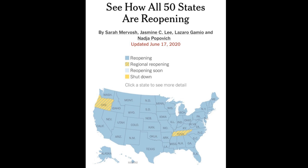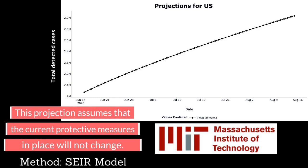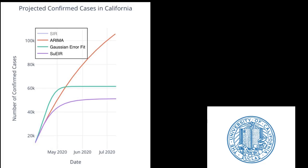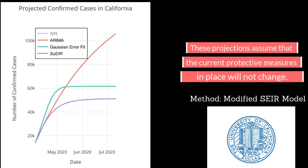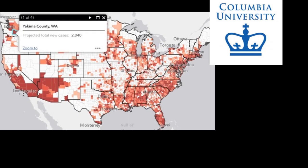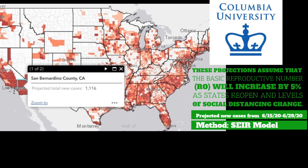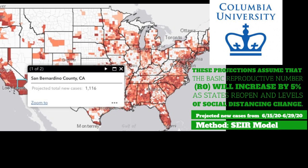Now as states begin to reopen, we are relying on projections to show us what will happen in the upcoming weeks. The consensus seems to be that even if lockdowns are not lifted, there would still be new cases every day. However, now that a lot of states are not in lockdown, there is a high risk of the number of infections increasing more rapidly, especially if we disregard the protective measures in place.